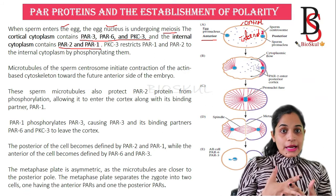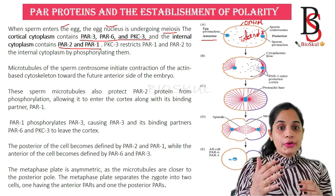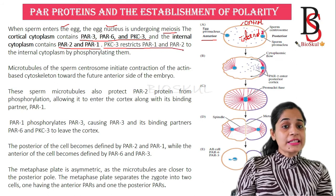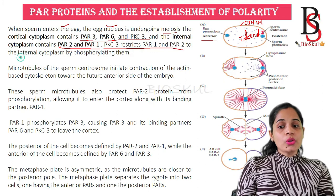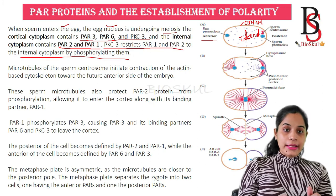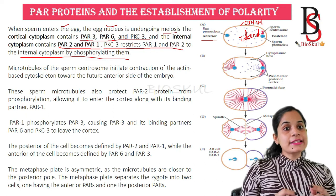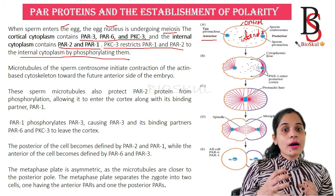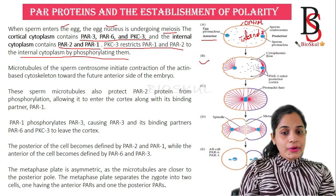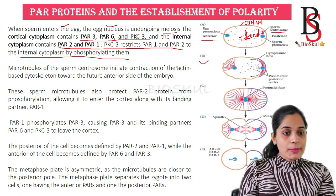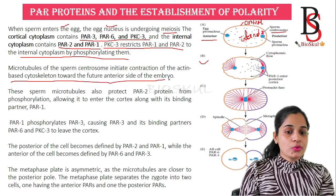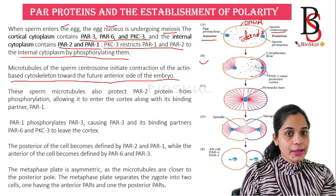So the cortical cytoplasm contains PAR-3, PAR-6, and PKC-3, while the internal cytoplasm contains PAR-2 and PAR-1. PKC-3, which is present in the cortical cytoplasm, restricts PAR-1 and PAR-2 to the internal cytoplasm by phosphorylating them. Initially, PKC-3 phosphorylates PAR-1 and PAR-2 and prevents them from entering the cortex. In the next step, the microtubules of the sperm centrosome initiate contraction of the actin-based cytoskeleton toward the future anterior side of the embryo.